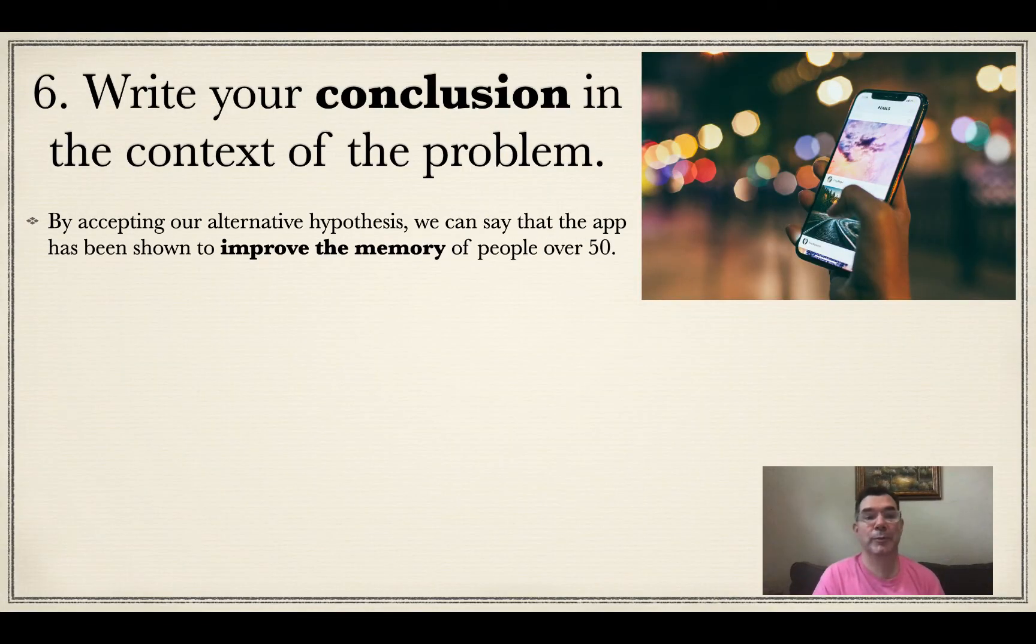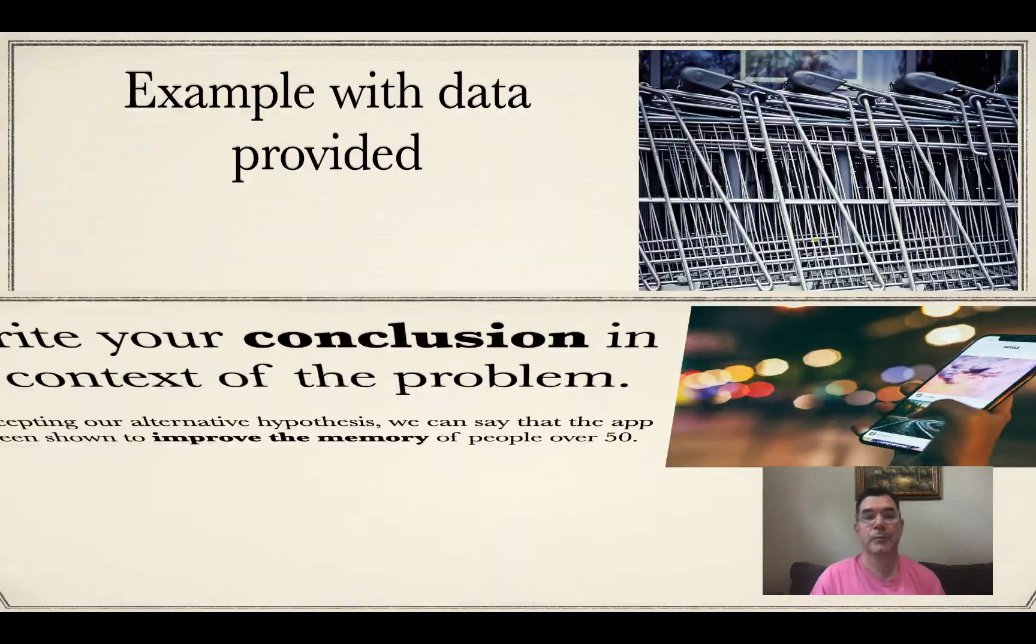What does that mean for the problem? It means that by accepting our alternative hypothesis, we can safely say that the app has been shown to improve the memory of people over 50. People are remembering more words using the app.